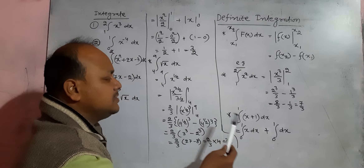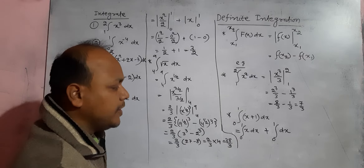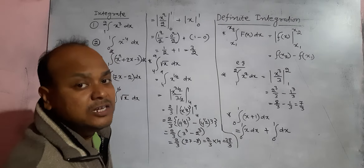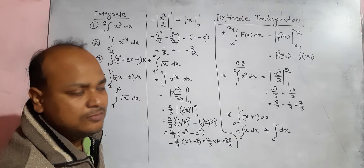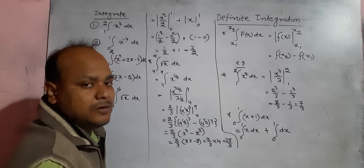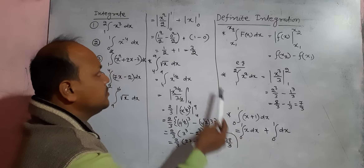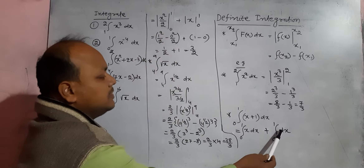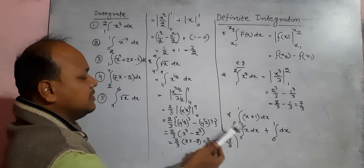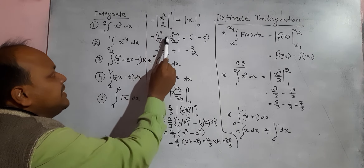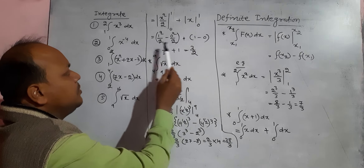Another example: let us take a polynomial of two terms with definite limits. We split the integration in accordance with the terms. Using the formula, the value of n is 1, so we get x²/2; and the integration of dx is x. With the limits, we put the higher limit in for x minus the lower limit in for x, for each term, and that gives the solution.